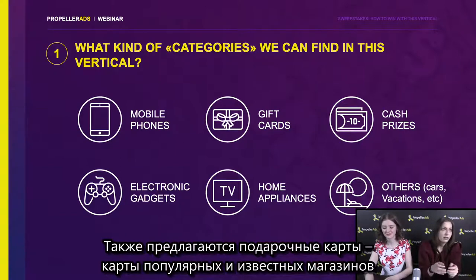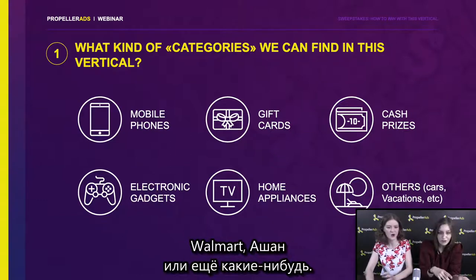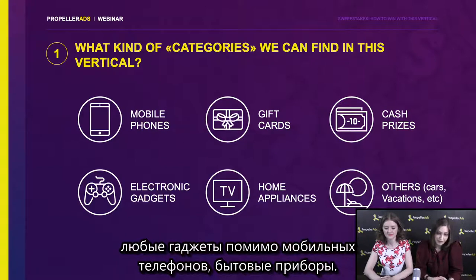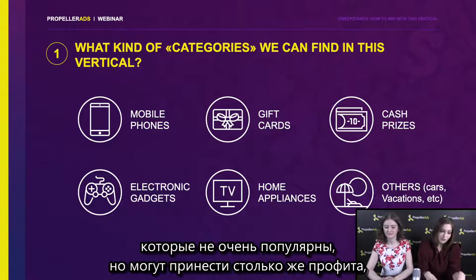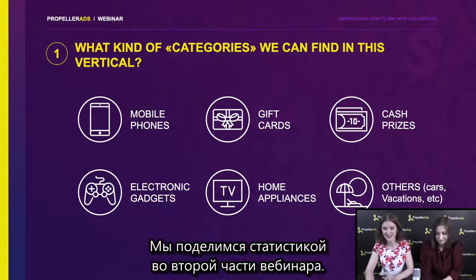We also have gift cards — those are gift cards for different popular and well-known markets and supermarkets like Amazon, Walmart, or anything else. Cash prizes can also be put at stake, as well as electronic gadgets except for mobile phones, home appliances, and the mystery category 'others.' Those are probably local types of offers that are not widespread much, but all together they can bring as much profit as one of the more popular categories like mobile phones or gift cards. We'll show you statistics in the second part of the webinar.